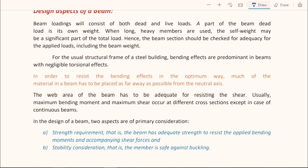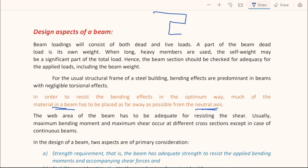To resist the bending effect at an optimum level, much of the material in the beam has to be placed far away from the neutral axis. You have to choose a section and decide its dimensions such that the beam is able to resist the bending effect without failing. The most effective way is to put the material of the beam away from the neutral axis. Consider a symmetrical I-section — the neutral axis is exactly at the center, with flange thickness tf, web thickness tw, and some height.